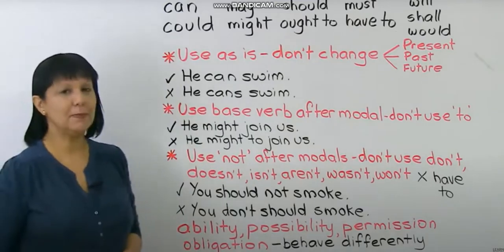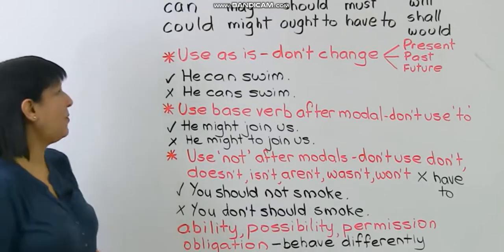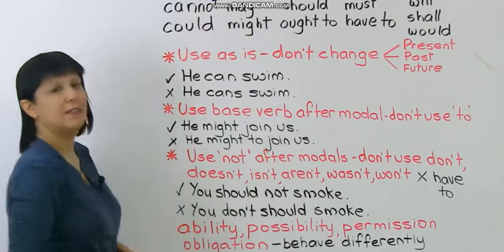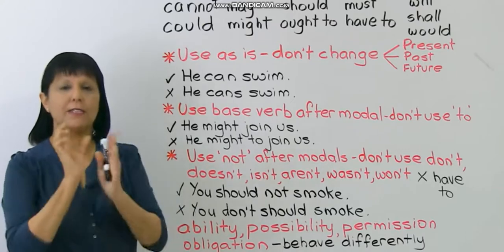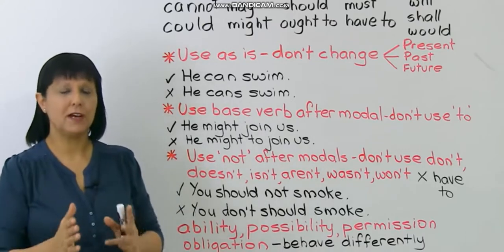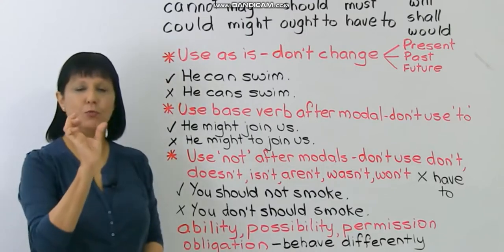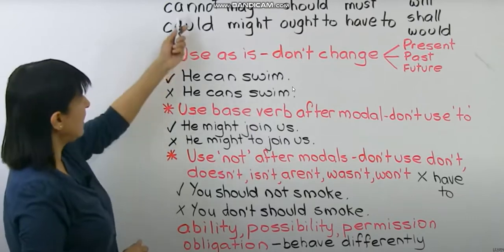One more important thing: with 'can,' 'not' actually becomes one word — 'cannot.' You don't say 'can not' as two separate words — you say 'cannot.' Almost always, 'not' is a separate word with all other modal verbs, but not with 'can.' With 'can,' it becomes one word: 'cannot.' For example, 'I cannot arrive on time.'